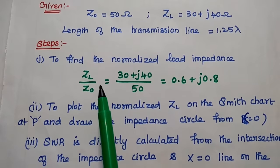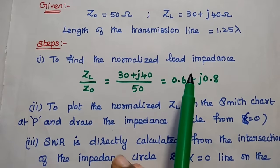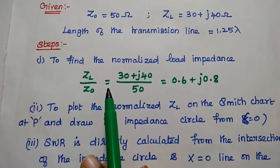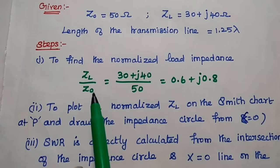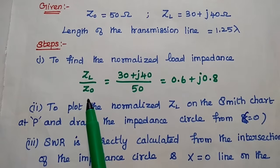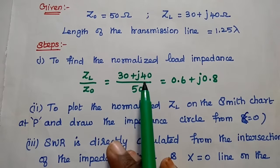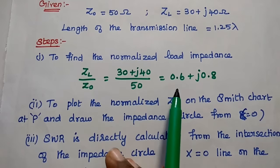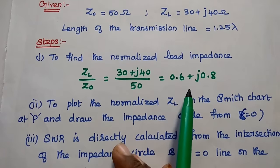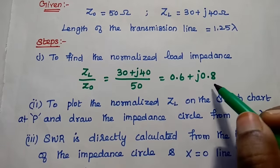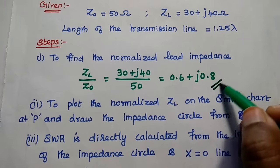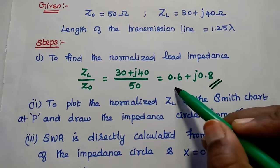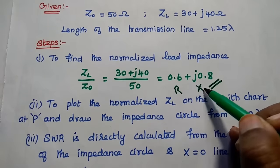The first step is to find the normalized load impedance. To get the normalized load impedance, we have to divide the load impedance by its characteristics impedance. So ZL divided by Z0 is equal to 30 plus J40 divided by 50. We get the normalized load impedance as 0.6 plus J0.8, where 0.6 is the resistance value and 0.8 is the reactance value.